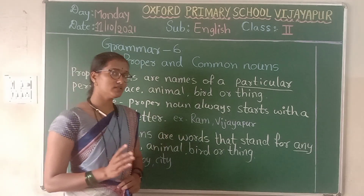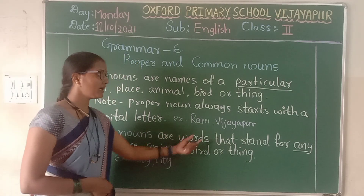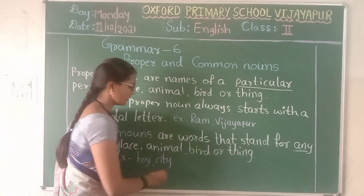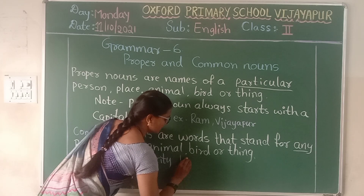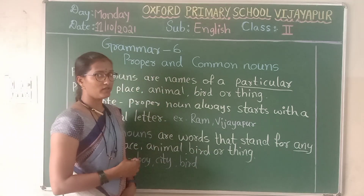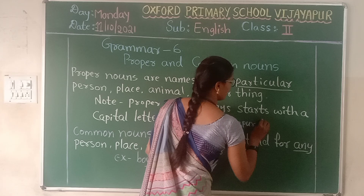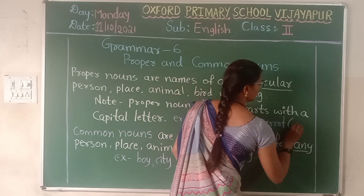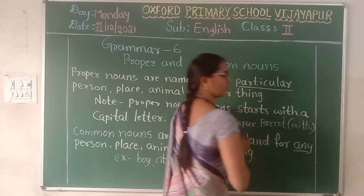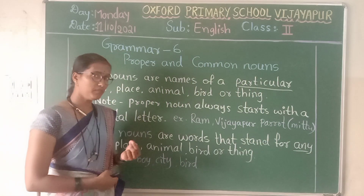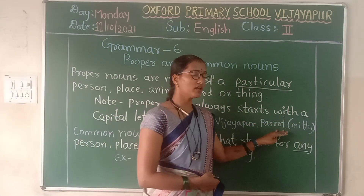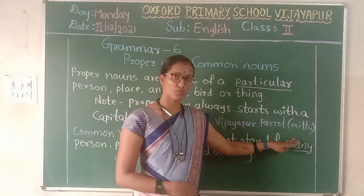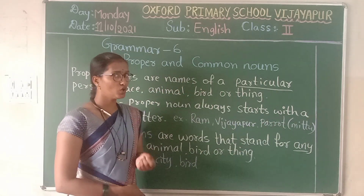Now you understood the difference between common noun and proper noun. Here is one more example: let us say 'parrot' — parrot is just a word for any bird. And we will keep the name 'Mitu.' The name of the parrot is Mitu — the special name given to the parrot is Mitu. So 'parrot' is a common noun.